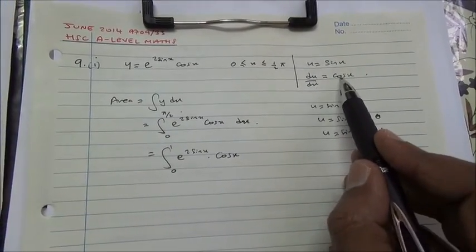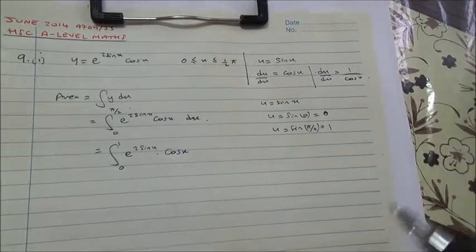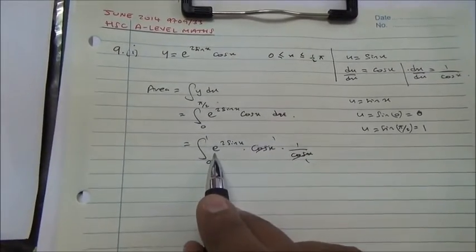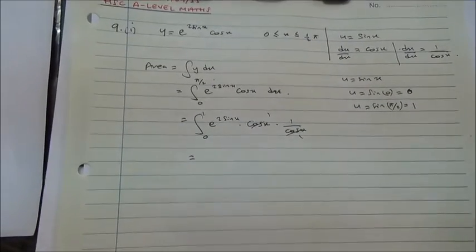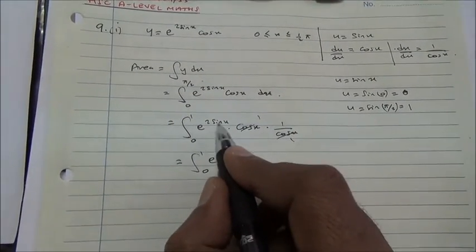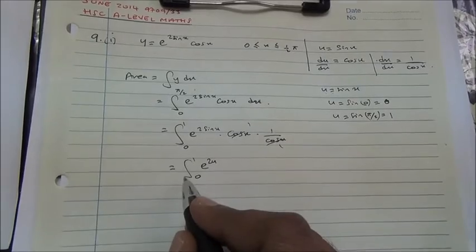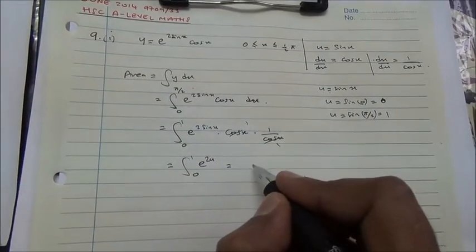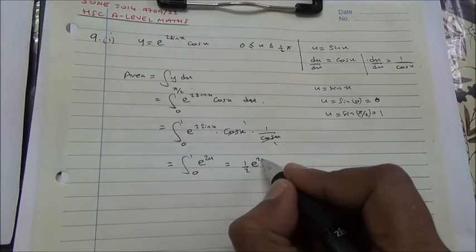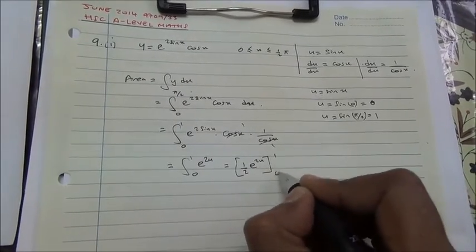Since du/dx = cos x, we have dx = du / cos x. Substituting, the cos x terms cancel, leaving the integral from 0 to 1 of e to the 2u du, since sin x = u. Integrating gives ½ e to the power of 2u, evaluated with limits 1 and 0.